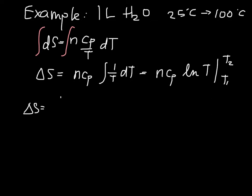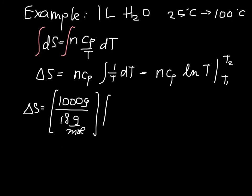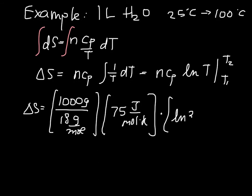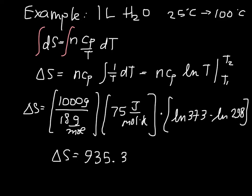Plugging in the number of moles (1000/18), Cp = 75 J/mol·K, and ln(373) − ln(298) — remembering to use temperatures in Kelvin — we get delta S = 935.35 J/K. The mole units cancel, leaving units of joules per Kelvin.